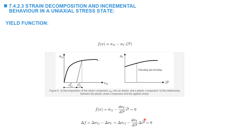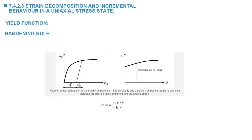The consistency condition is usually used to calculate the equivalent plastic strain, or the increment in the equivalent plastic strain, knowing an increment in the stress. The next ingredient for the plasticity model is the hardening rule, which describes the relationship between the yield stress and the plastic strain or the equivalent plastic strain. The Ramberg-Osgood model is one example of a hardening rule.